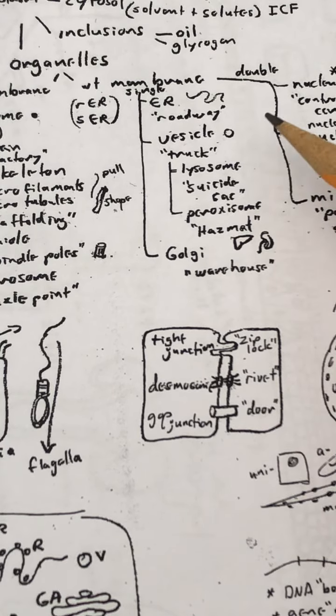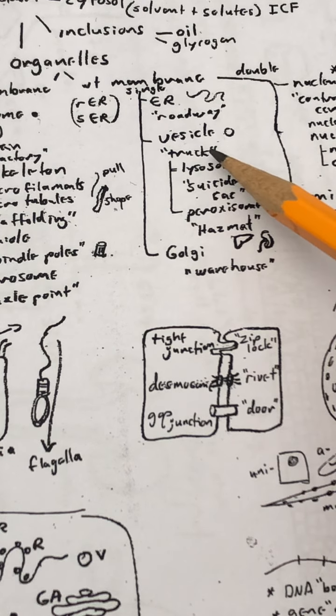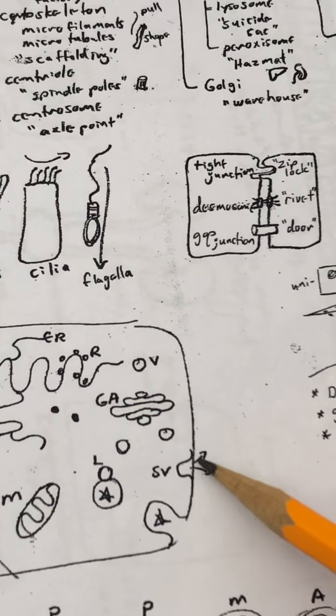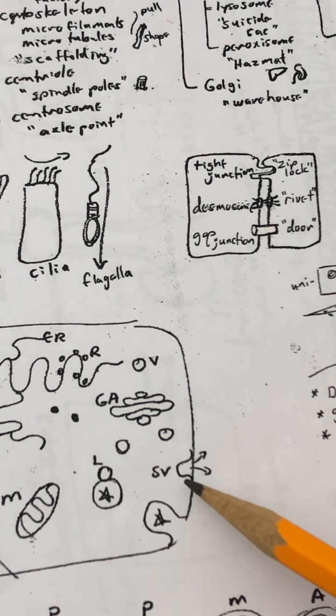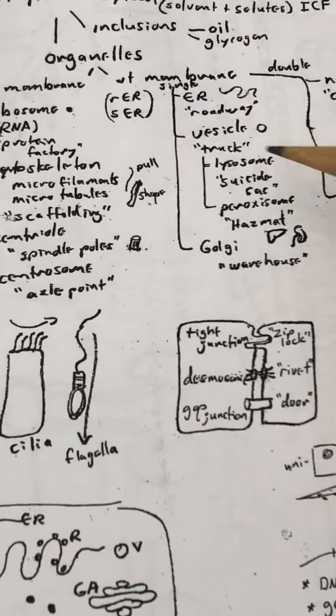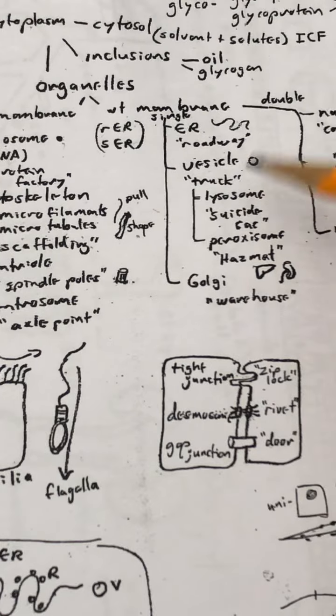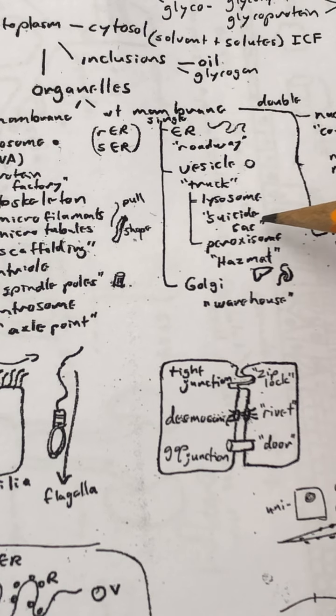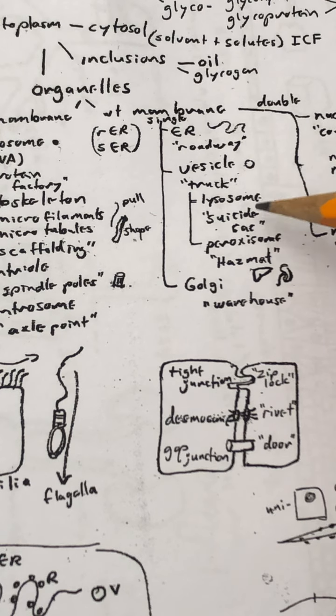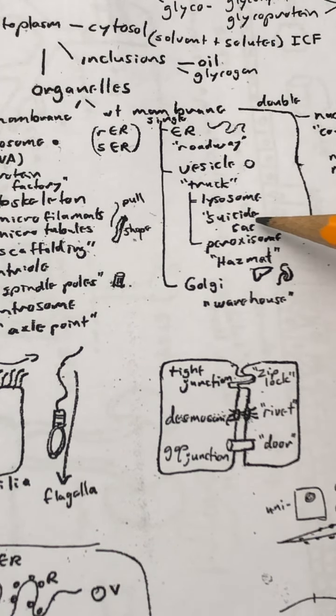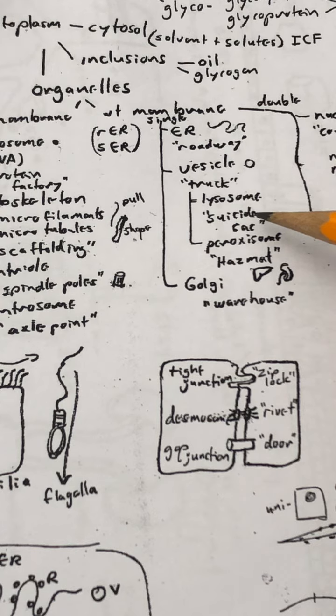Some of these things drift to the cell membrane, connect to the cell membrane, and throw things out. Those would be called secretory vesicles. Others stay inside the cell, and if they're carrying particularly dangerous chemicals inside, they may be a lysosome. Lyso means break. They're commonly nicknamed suicide sacs, because their chemistry is so dangerous inside that they can destroy all kinds of materials.